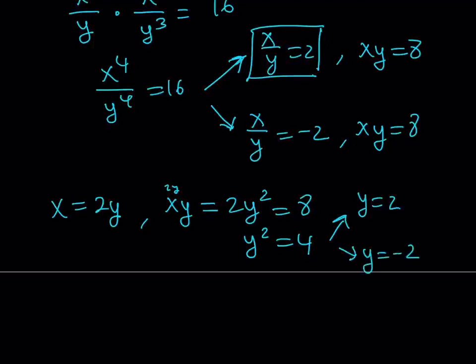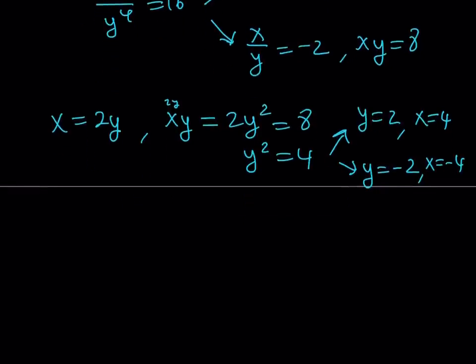We also have that x equals 2y, this just means that x is equal to 4 or negative 4. So this kind of gives us two ordered pairs, which is 4, 2 and negative 4, negative 2.